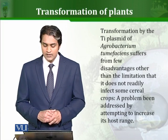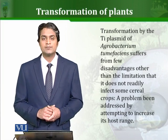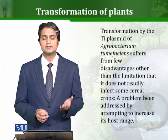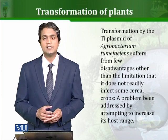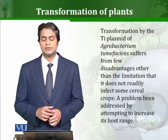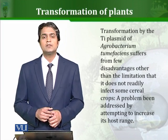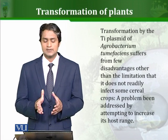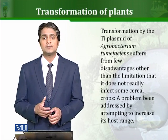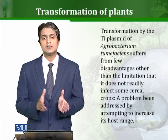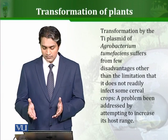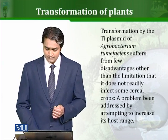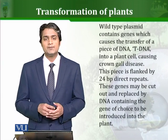Transformation by the Ti plasmid of Agrobacterium tumefaciens suffers from a few disadvantages compared to other mechanisms of plant transformation. The big disadvantage is that this Ti plasmid is not able to infect a lot of different cereal crops. However, this host range can be enhanced and expanded so that it can grow in and transfer genes to more different plants. This is a major hurdle which is being addressed by scientists worldwide.